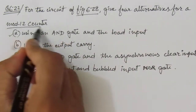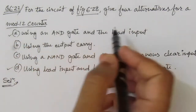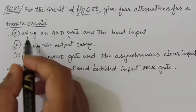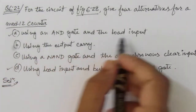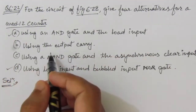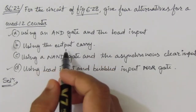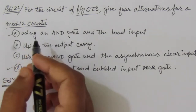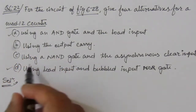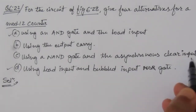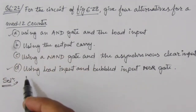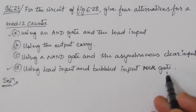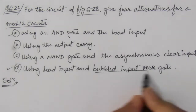That means we have to design a mode 12 counter in 4 different ways. The first condition is using an AND gate and the load input. The second condition is using the output carry. The third case is using a NAND gate and an asynchronous clear input. And in the fourth case, using the load input and the bubble input to a NOR gate.